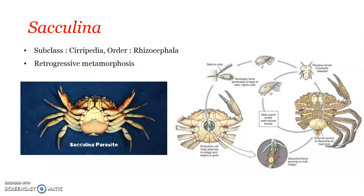Welcome back. We will continue with the discussion on Sacculina. We already saw the morphological features of Sacculina - the adult and the life cycle - where it starts with nauplius larva, passing on into the free-swimming cypris stage, then fixed cypris stage, then kentrogon stage. The kentrogon gets attached onto the ventral side of the host crab, and undifferentiated cells are pushed into the body of the host. Root-like structures extend into the body of the host and extract nutrients, forming Sacculina interna.